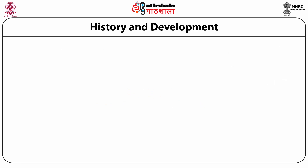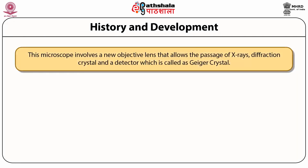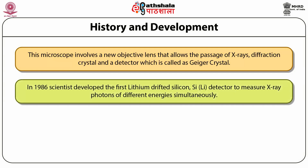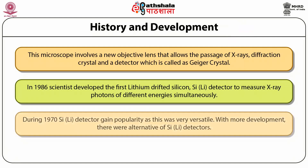Moving further into the history and development of EDX systems attached to SEM or TEM: the microscopes involved a new objective lens that allows the passage of x-rays, the diffraction crystal, and the detector — called the geiger crystal. In 1956, scientists developed the first lithium-drifted silicon detector to measure x-ray photons for different energies simultaneously. During 1970, the silicon lithium detector gained popularity as it was very versatile.